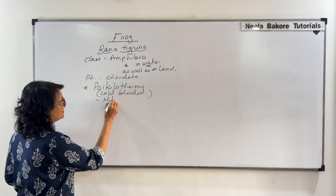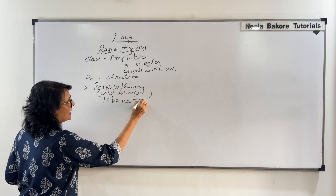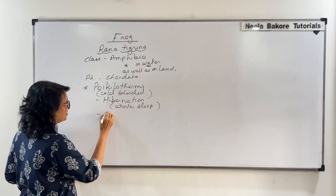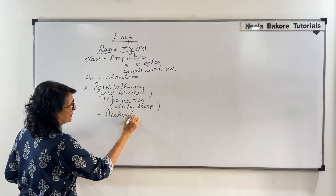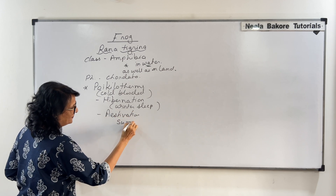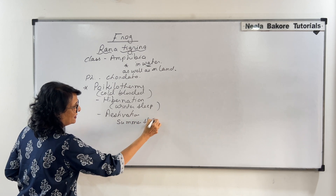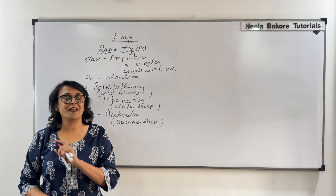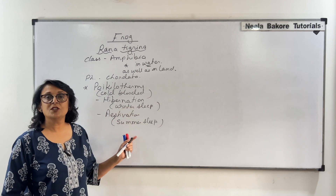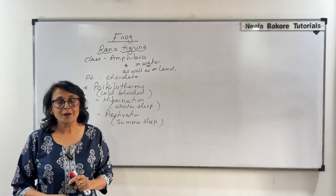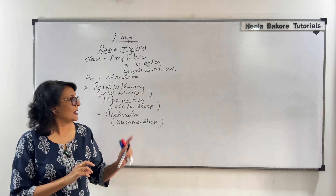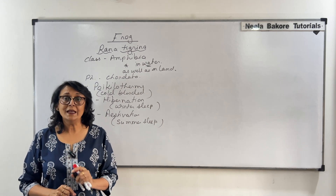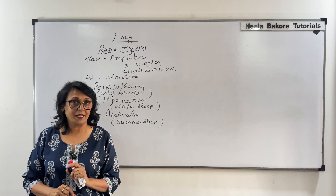To avoid these extreme conditions, they go into summer sleep and winter sleep. Hibernation is winter sleep and aestivation is summer sleep. During these periods, metabolism is very slow. Before entering hibernation or aestivation, they store reserved food and burrow in the mud, surviving only on that stored food material.